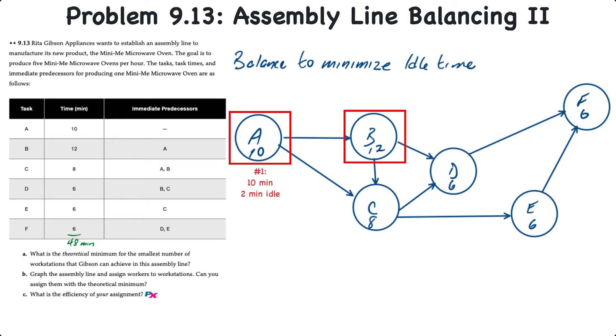So we'll label that workstation 1 with a station time of 10 minutes and 2 minutes of idle time. Workstation 2 contains task B with a station time of 12 minutes and 0 idle time. If we look at activity C has a time of 8 minutes and unfortunately there is no other task in close proximity with a task time of 4 minutes or less to make 12, so activity C has to be a workstation on its own as well. So we'll call this workstation 3 with a station time of 8 minutes and 4 minutes idle time.